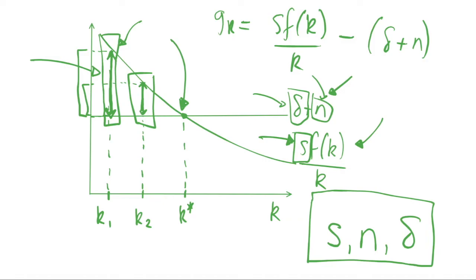We then have the income gap shrinking over time, so rich and poor countries have converging living standards. However, this isn't shown in the data — we actually have widening inequality in lots of developing countries, so we don't observe absolute convergence. This doesn't mean the Solow model fails; it just means the assumption fails — that we have the same savings rate, population growth rate, and depreciation rate in different countries. So we need to look at it without assuming these parameters are all the same.